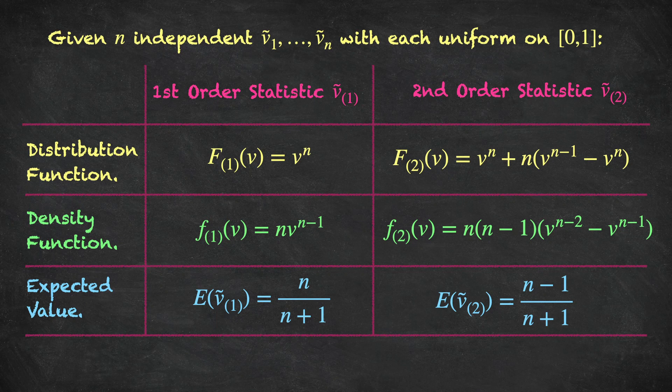Here is a summary of the results obtained in our analysis of order statistics so far. The table is available in the lecture notes — go through each result and make sure you understand how each was derived. We're going to be using them as we analyze auctions next.